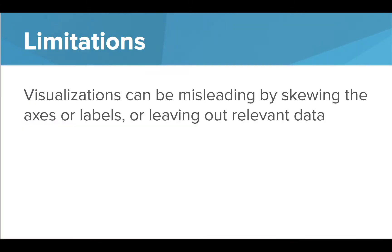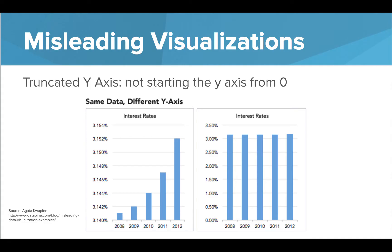Visualizations can be misleading if someone has skewed the axis or the labels, or if they've left out data that's important. Take a look at the two graphs here — these are actually displaying the exact same data but in different ways. The graph on the left does not start at zero; in fact it only goes from 3.14 to 3.154, a very small difference. But the way it's displayed definitely makes it look like these interest rates have increased dramatically, when they've only increased a tiny bit. This is called a truncated y-axis, and it's a problem when the display is not starting the y-axis at zero.